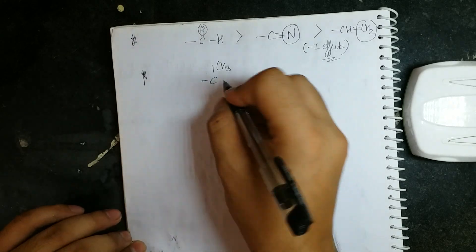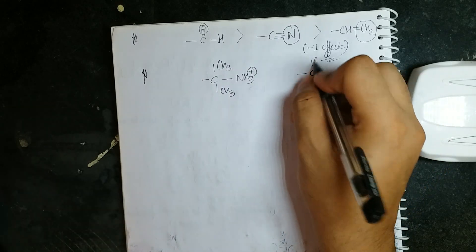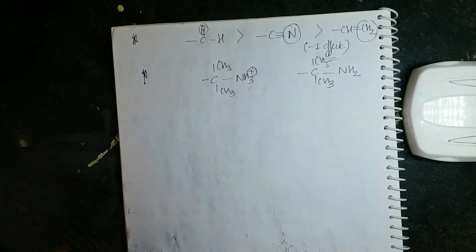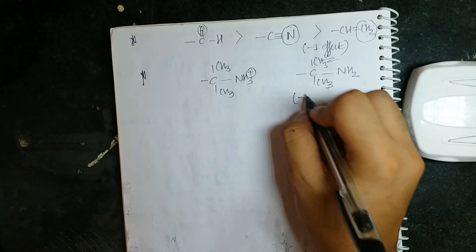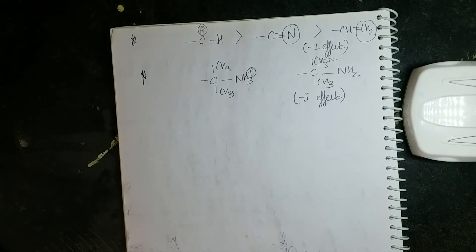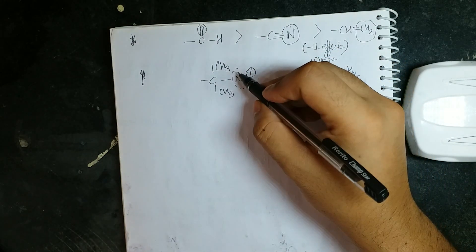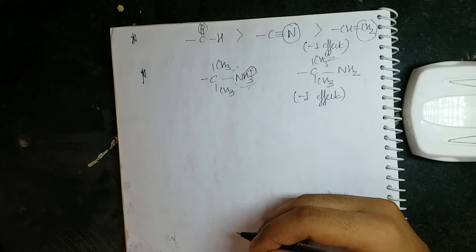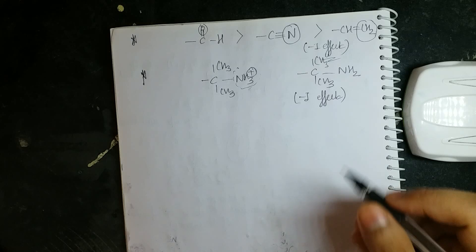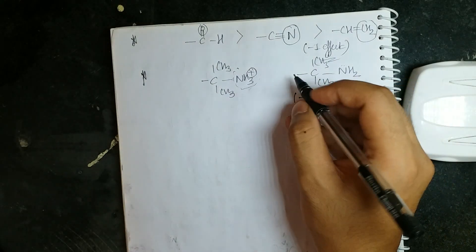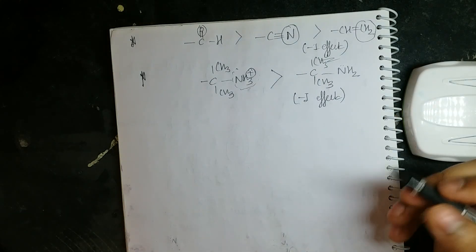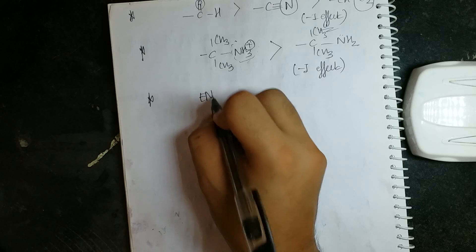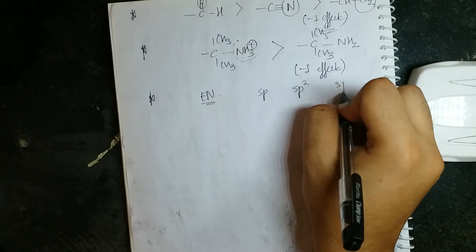Compare –NR₂H⁺ (positively charged) versus –NR₂ (neutral). When a group carries a positive charge, it is electron deficient and will attract electrons from neighboring atoms, showing a greater minus I effect. The neutral group does not need to attract electrons. Therefore: the positively charged group shows greater minus I effect than the neutral one.